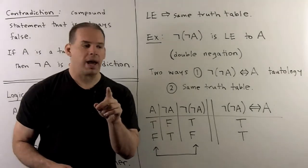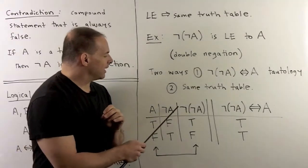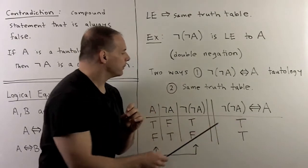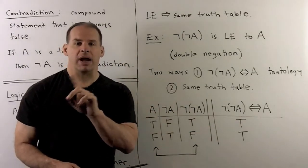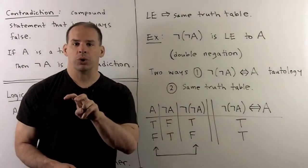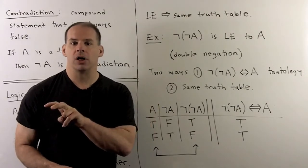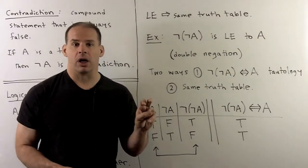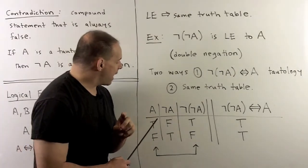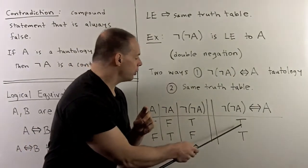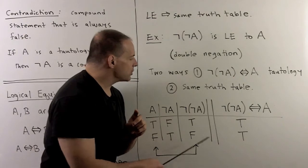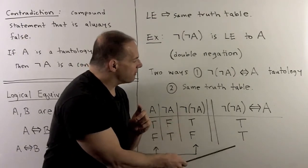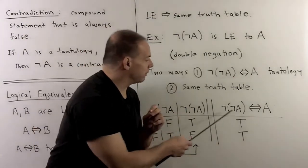If we go one step further and compute not-not-A biconditional A: we compare the values — if they're both true we get true, if they're both false we get true, if they're different we get false. Here we have true-true giving true, and false-false giving true. So we see that we have a tautology for this statement, confirming logical equivalence.